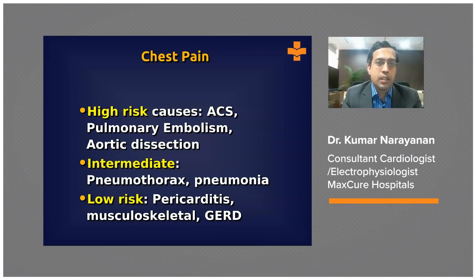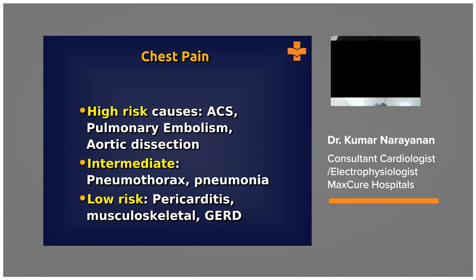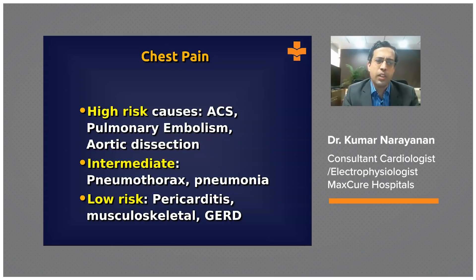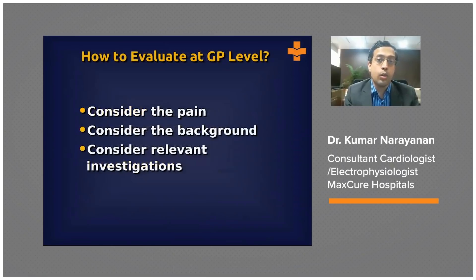When we look at chest pain as a symptom, we have potentially high-risk causes — we'll mainly focus on ACS, but also pulmonary embolism and acute aortic dissection, where failure to act promptly can lead to a major issue. Intermediate-risk causes include pneumothorax or pneumonia. Then there are low-risk causes such as pericarditis secondary to a viral infection, musculoskeletal pain, acidity, or gastroesophageal reflux disease — things that need symptomatic medication and then the patient can go home. You need to categorize where in this spectrum a particular patient falls.